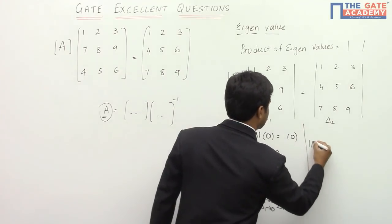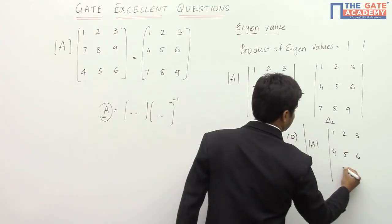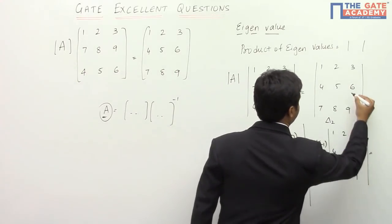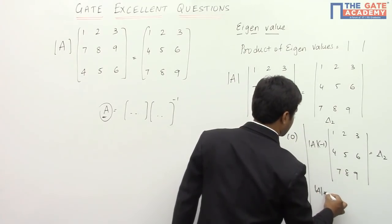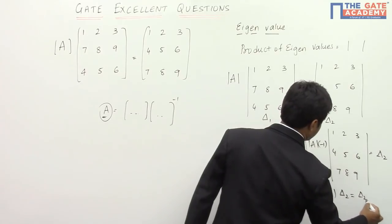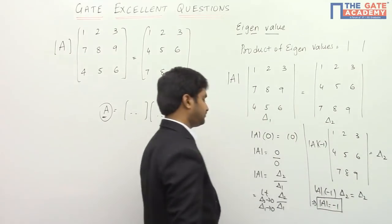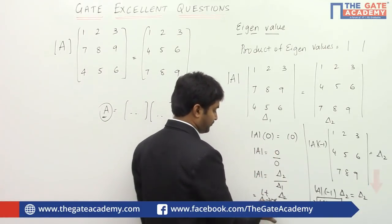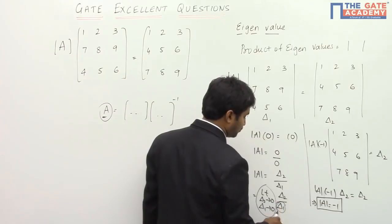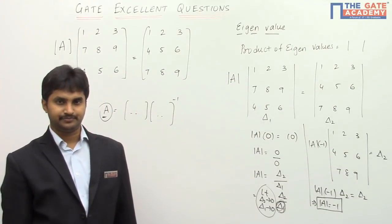So if the determinant of matrix two is Δ₂, then the first determinant Δ₁ equals Δ₂ multiplied by minus one, because it is obtained by interchanging rows of matrix two. Therefore determinant of A equals Δ₂ divided by Δ₁ equals Δ₂ divided by (−1 × Δ₂). Δ₂ cancels out, giving determinant of A equal to minus one.